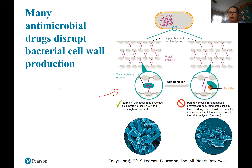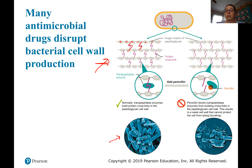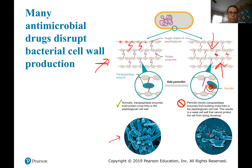Here we can see a normal-looking cell wall with NAM and NAG subunits forming different layers. In a healthy cell, transpeptidation links them together into a strong cell wall with normal morphology. In the presence of penicillin or a similar antimicrobial that disrupts transpeptidation, you don't get that cross-linking. The cell wall becomes very weak, and osmotic forces of water and other substances destroy it, causing the cells to burst open or lyse.